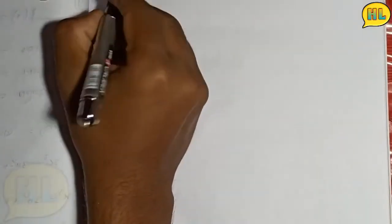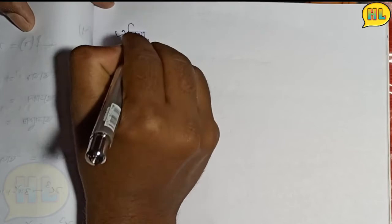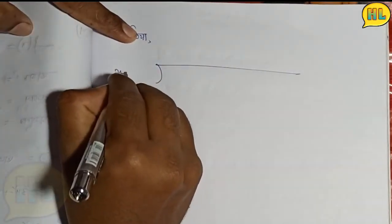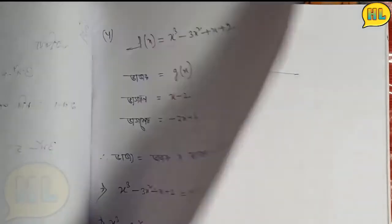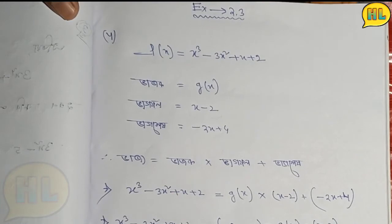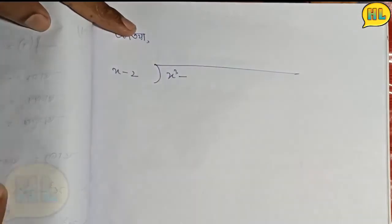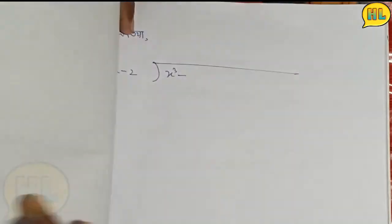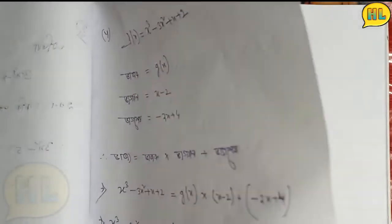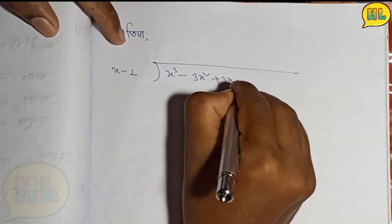X minus 2, if I factor it out, I get x square. X cube minus x cube, 3x square plus 3x minus 2.